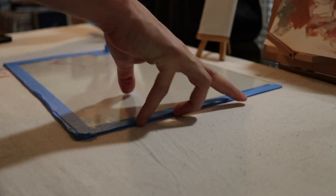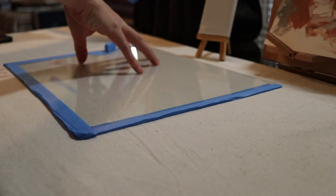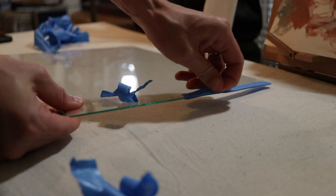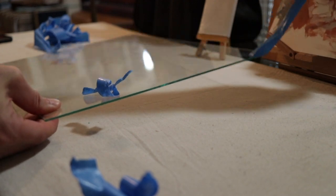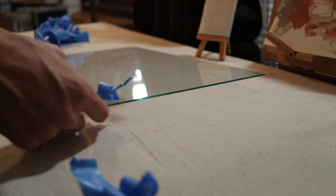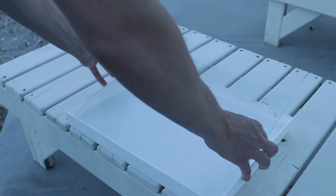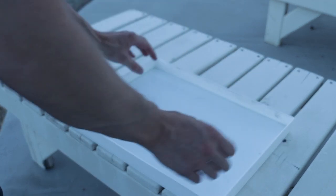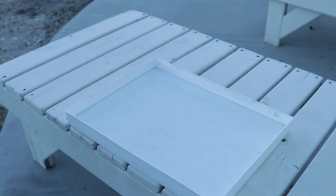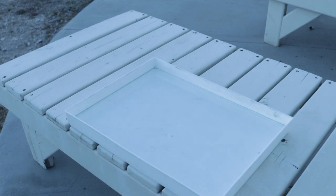Remove any protective covering on your glass. Make sure it fits snugly into your container and find a ventilated area to spray paint only one side of the glass.